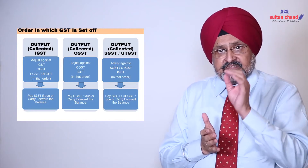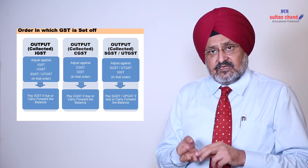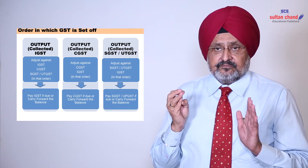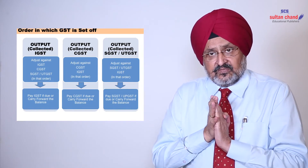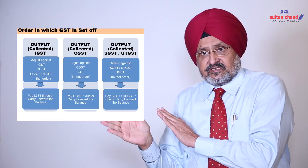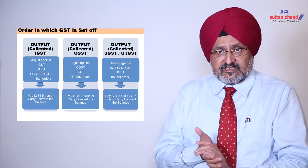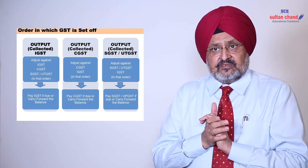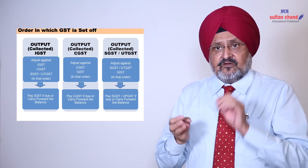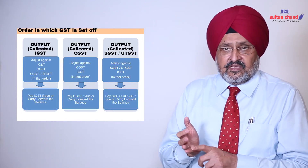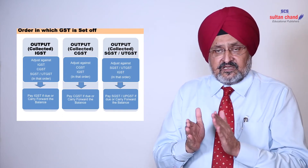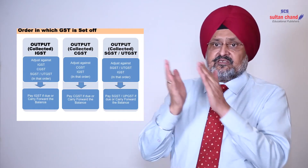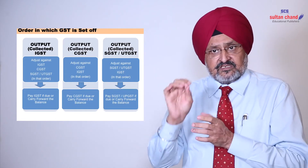Second is output collected CGST. It is to be adjusted first against CGST and then against IGST — in that order. Output CGST cannot be set off against SGST; it can only be set off against CGST and IGST. Third is output SGST and UTGST, which can be set off first against SGST or UTGST and then against IGST. This makes it clear that CGST cannot be set off against SGST and SGST cannot be set off against CGST. This is important.